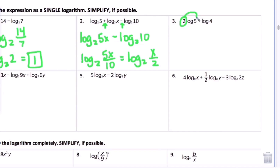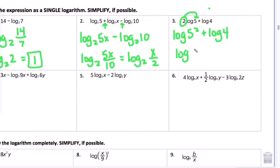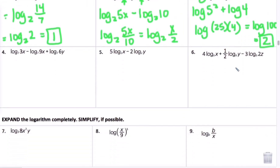Number 3: I notice a coefficient of 2 in front. Using the power property, I move it up as an exponent: log of 5 squared plus log of 4. Then using the product property for the addition: log of (25 times 4) equals log of 100. Since there's no base it's base 10, and 10 to what power gives 100? That's 2. Something that looked complicated gives us 2.